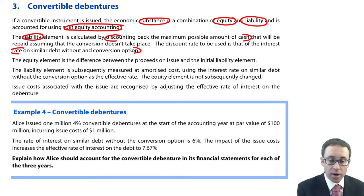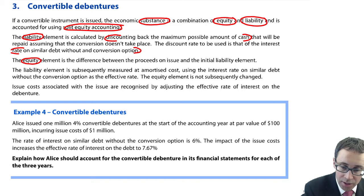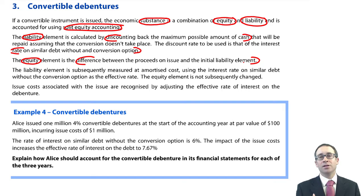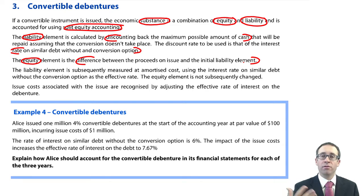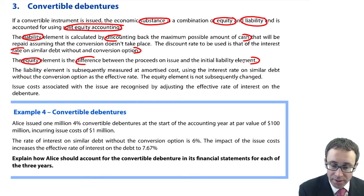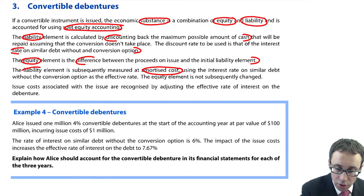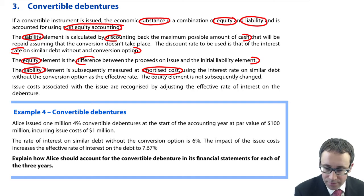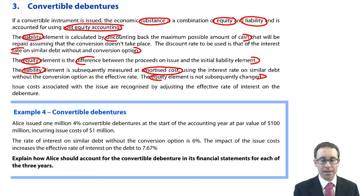To work out the equity, you take the difference between the proceeds and the initial debt element — once you've worked out what the debt is, you subtract one from the other and that gives you the entry to equity. The liability is then measured at amortized cost using standard calculations, and the equity element is not subsequently changed — you just leave it there essentially forever.